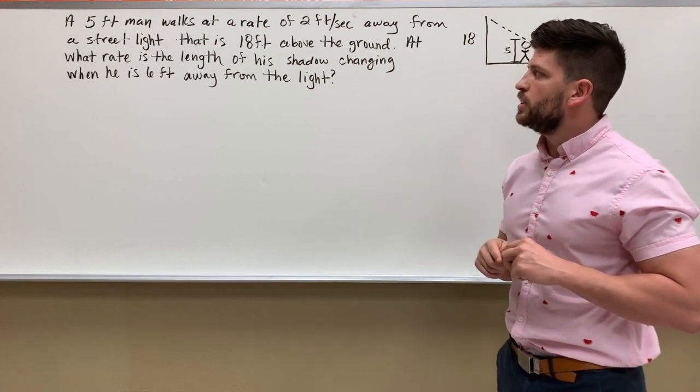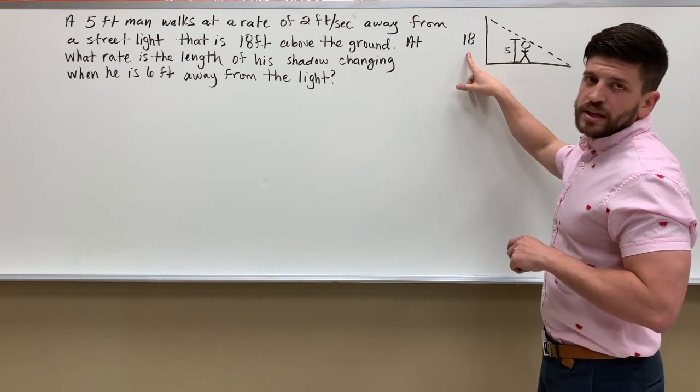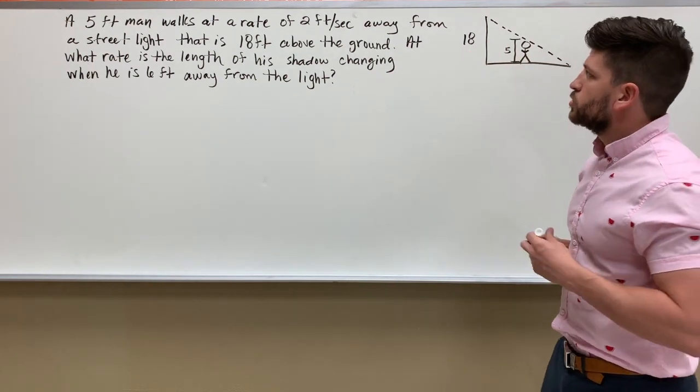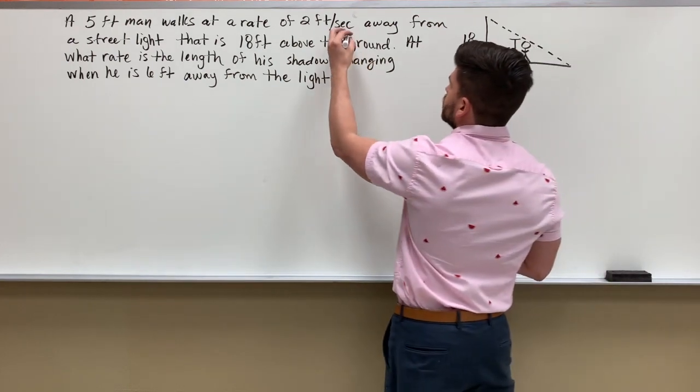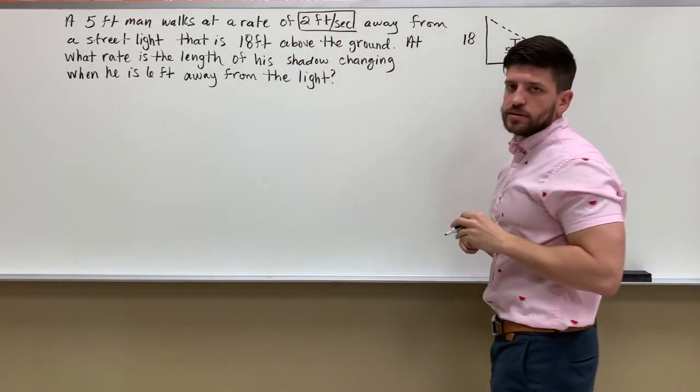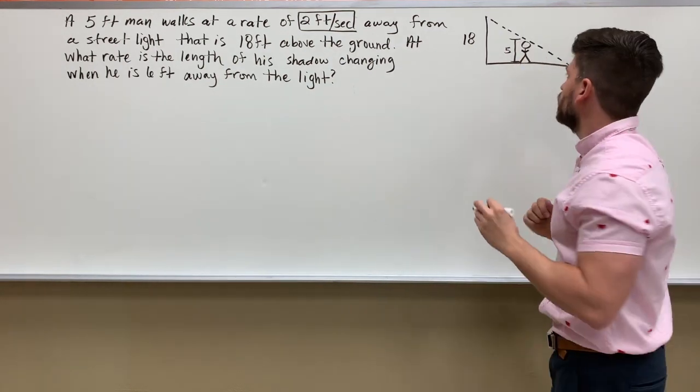So I've already done a picture here. My street light is 18 feet tall, my man's five feet tall. So again, I'm giving a rate, and this is the rate he's walking away from the light.